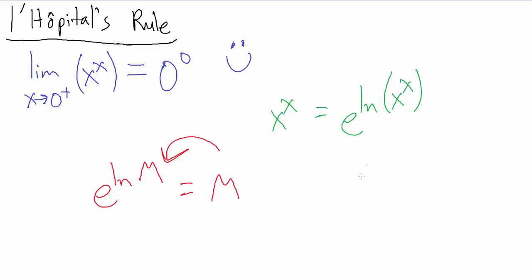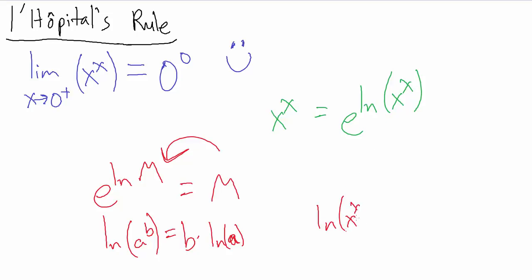Now how does that help us? There's also a property that says the natural log of a to the b equals b times the natural log of a. So if we have an exponent inside a log we can pull it out. Here we have natural log of x to the x, so that's going to be x times the natural log of x. So x to the x really equals e to the x times the natural log of x.